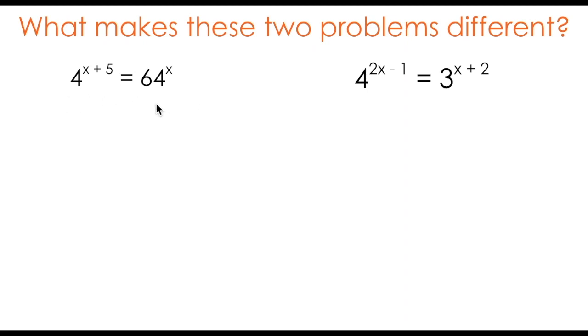Starting with the one on the left, if you've worked with exponential equations before, you may realize very quickly that 64 can be written as 4 to the power of 3. Writing it in this way allows me to make the observation that both sides of the equation now have a base of 4.